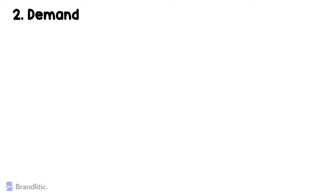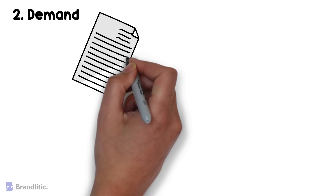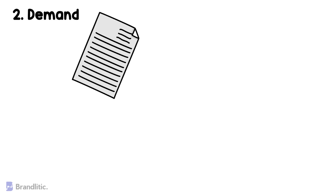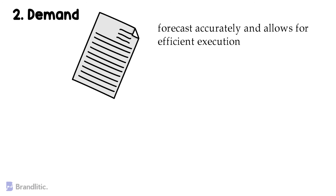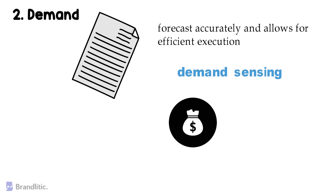The second component is Demand. SAP IBP for demand provides a precise demand plan, which can be used to forecast accurately and allows for efficient execution. Its ability to calculate accurate forecasts using advanced algorithms through demand sensing is extremely helpful, and a fully integrated demand planning helps in lowering inventory costs while achieving higher service levels.